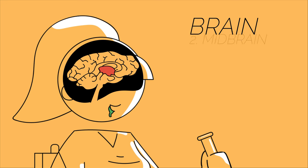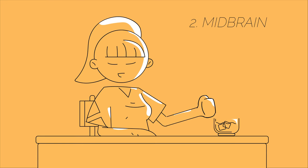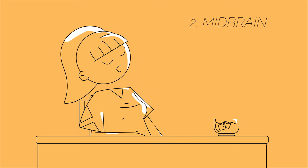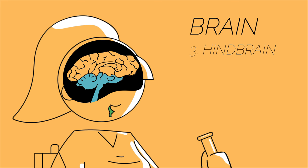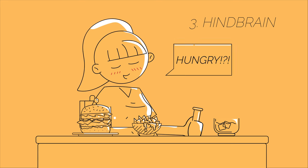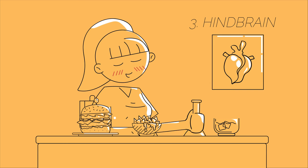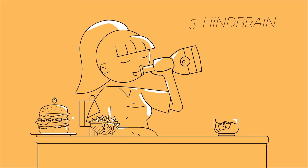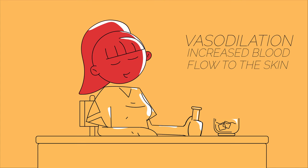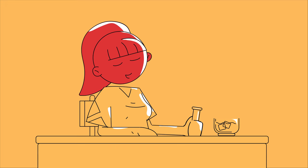Secondly, alcohol affects the midbrain, causing drinkers to lose emotional control and increases the chances of them passing out. Thirdly, it affects the hindbrain, including the brain stem, which controls appetite, body temperature, heart rate and consciousness. People might look red after drinking alcohol because it causes vasodilation — increased blood flow to the skin.